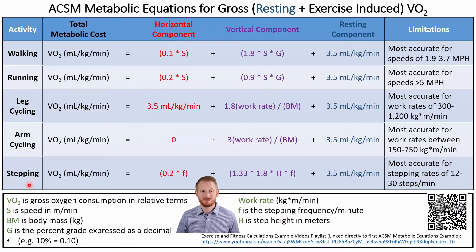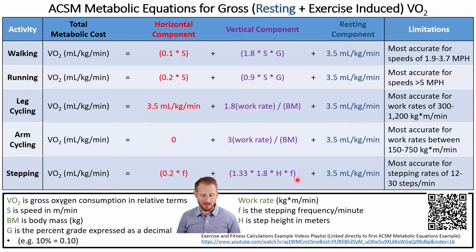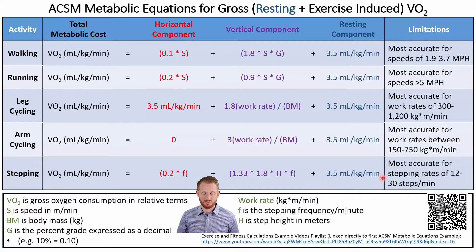For stepping exercise — like aerobic steps — VO2 equals 0.2 times the frequency (how many times you step up and down per minute), plus 1.33 times 1.8 times the height of the step times the stepping frequency, plus the resting component of 3.5. This is most accurate between stepping rates of 12 and 30 steps per minute.